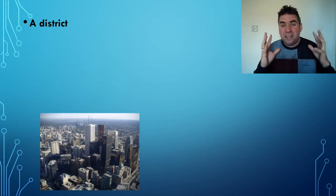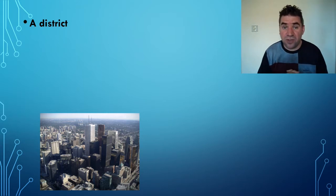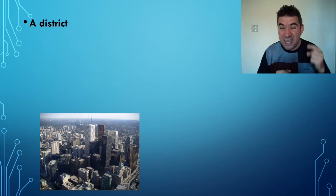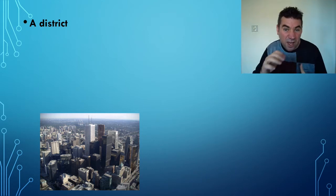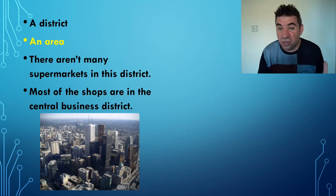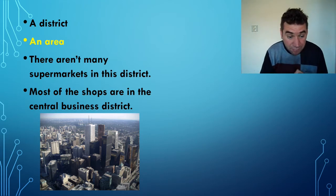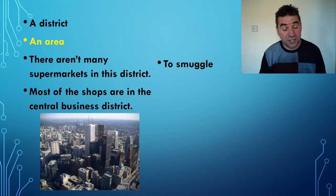A district. A district is pretty much an area. If you look at this picture of a classic city center, this is known as the CBD — the Central Business District — in other words, the area where all the business takes place. It could be an industrial district with all the factories. 'There aren't any supermarkets in this district, and most of the shops are in the Central Business District.'